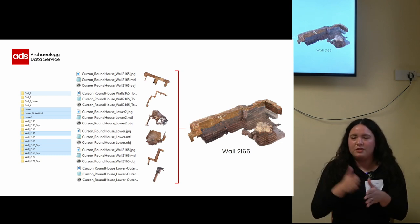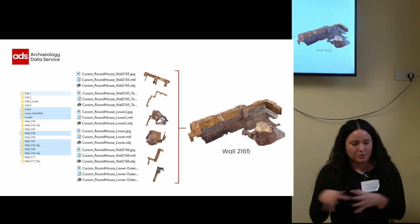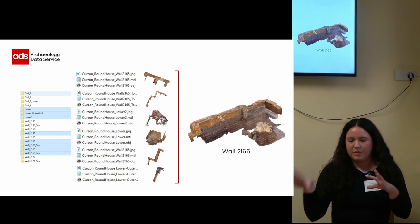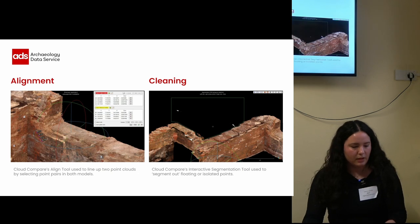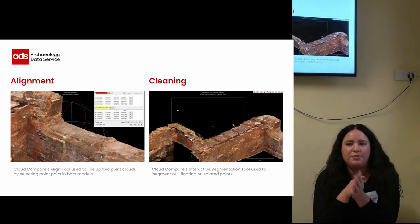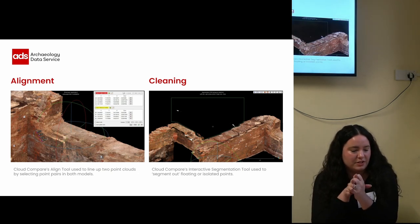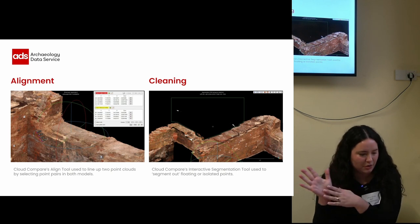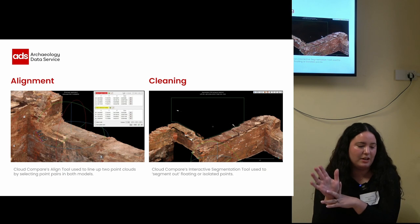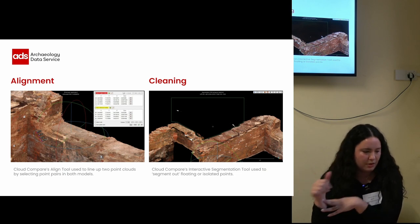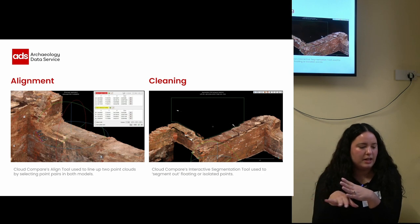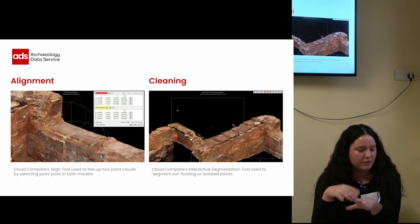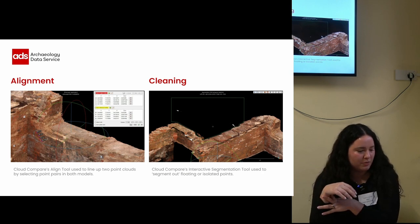And so tackling one structure at a time, I grouped together all the models that made up each feature so they could then be cleaned. And cleaning the 3D data from the Curzon Street Station was a very detailed job, but I won't get too technical. I just want to mention that these were the two main tasks: aligning the meshes by selecting point pairs and then deleting any floating triangles or noise or junk geometry.